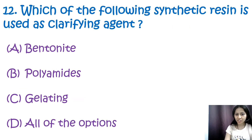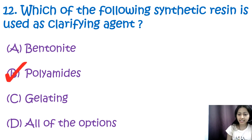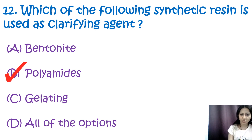Question 12: Which of the following synthetic resins is used as a clarifying agent? Options are bentonite, polyamide, gelatin, and all of the above. The correct answer is B, polyamide. Polyamides are a type of synthetic resin used as a clarifying agent. Clarifying agents are additives that enhance the physical, mechanical, and optical properties of polymers.